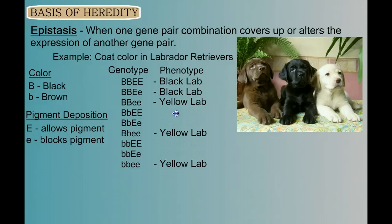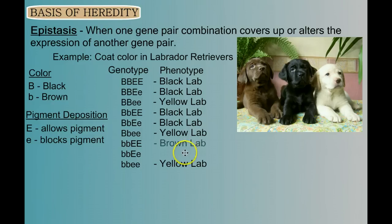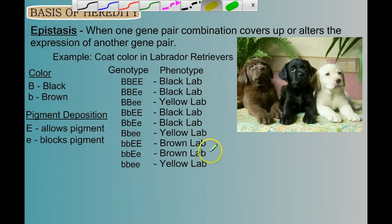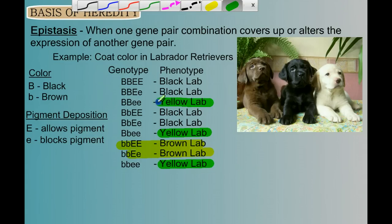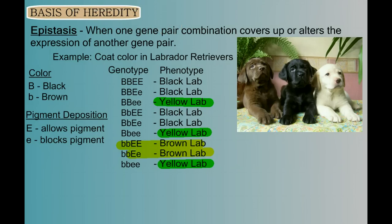If we then consider what the first two letters are: any time we have a big B with a big E, we have black; and any time we have two little b's with any big E, we get brown. You may notice that there are only two genotypes that give brown labs, only three that give yellow, and four that give black labs. So when you go to the dog park, you probably see more black labs than yellow labs, and more yellow labs than brown labs — and now you know why.